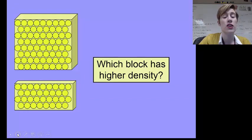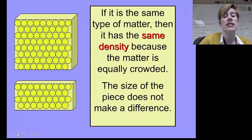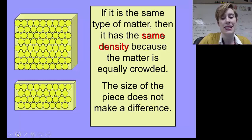Now let's look at two blocks. So technically, if it's the same type of matter, so if this is the same block that I just cut in half, it also has the same density because matter is equally crowded. The size of the piece doesn't make a difference. It's how crowded the particles are. We can see in both pictures that the atoms are crowded just as tightly in both pictures, so they have the same density.